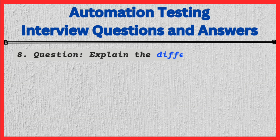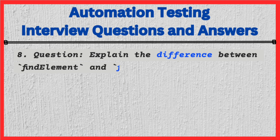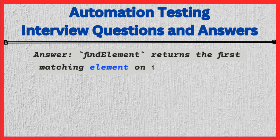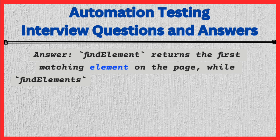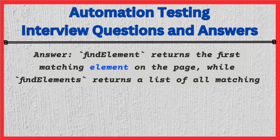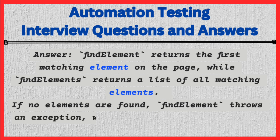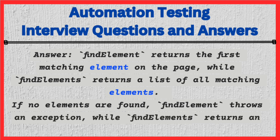Question: Explain the difference between findElement and findElements in Selenium. Answer: findElement returns the first matching element on the page, while findElements returns a list of all matching elements. If no elements are found, findElement throws an exception, while findElements returns an empty list.